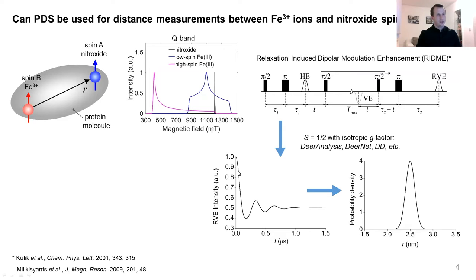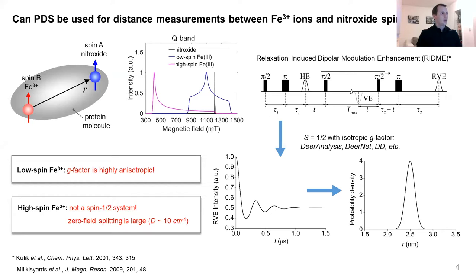Next, of course, we need to translate this time trace into the distance distribution. For spin centers with quantum number S=1/2 and isotropic g-factor, there are a number of programs that can do that, for example DeerAnalysis, DeerNet, DD, and so on. However, neither low-spin iron nor high-spin iron are isotropic spin centers. Also, obviously, for high-spin iron we do not have a spin one-half system. So the additional question which arises is: how can we transform the time trace into the distance distribution for these two metal centers?